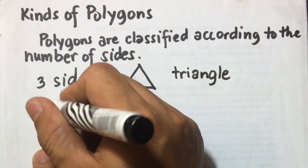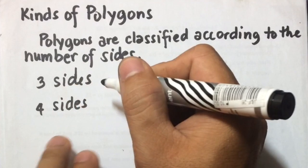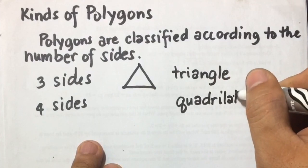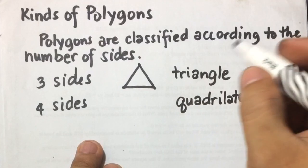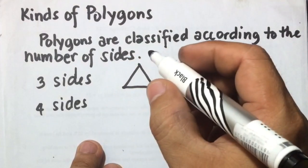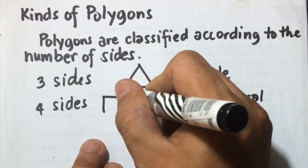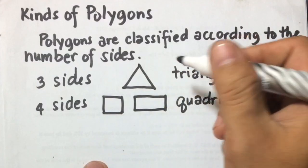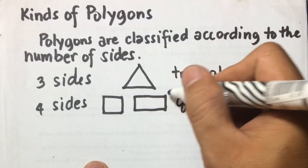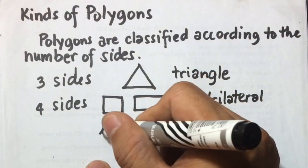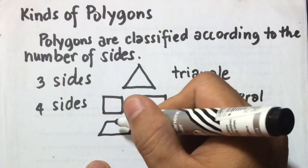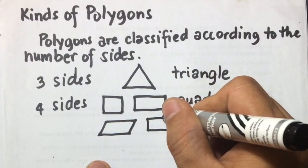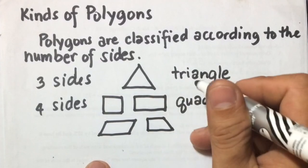And if you're going to have four sides, that name will be quadrilateral. So any polygon with four sides is called a quadrilateral. For example, a square is an example of a quadrilateral. Another is rectangle — a rectangle is another quadrilateral. And another here is parallelogram; this has four sides, meaning this is also a quadrilateral. And we also have trapezoid, so a trapezoid is also a quadrilateral.